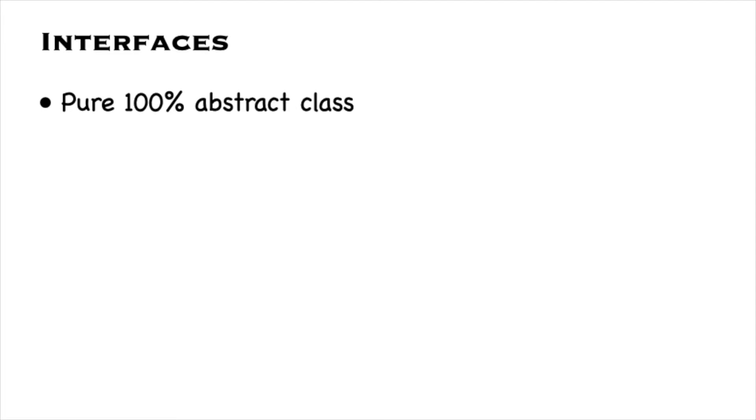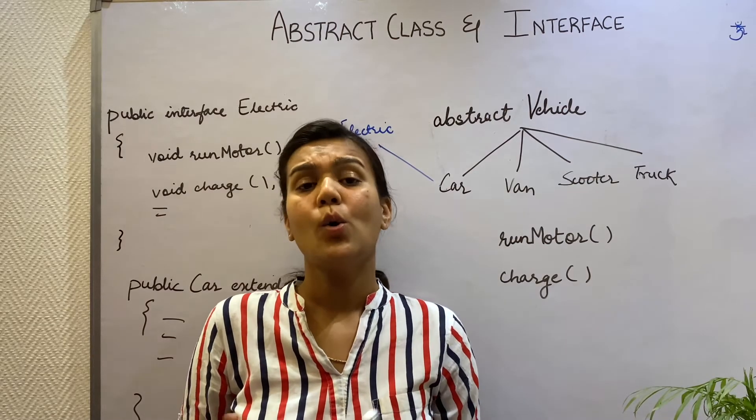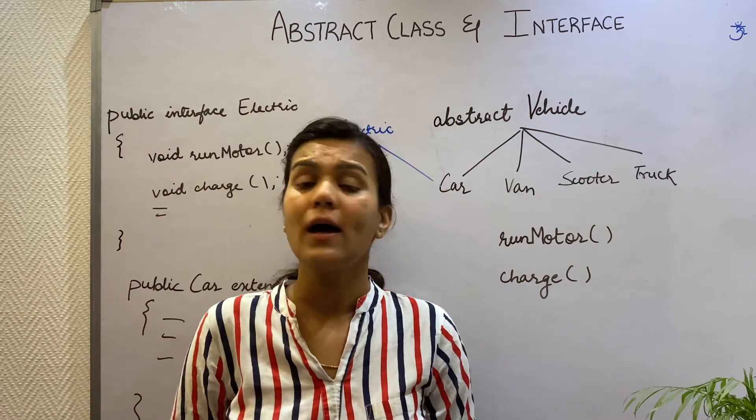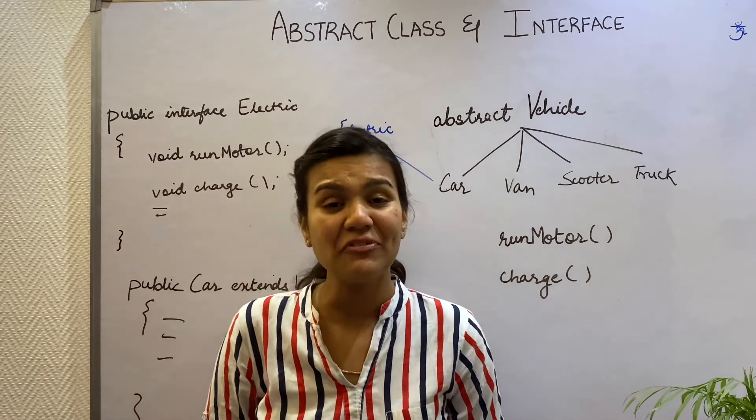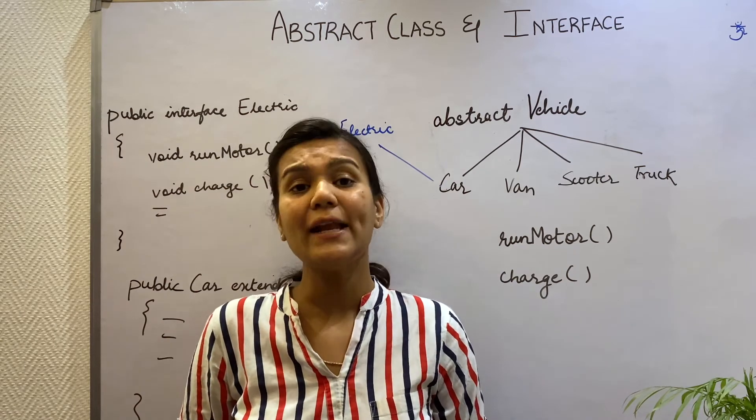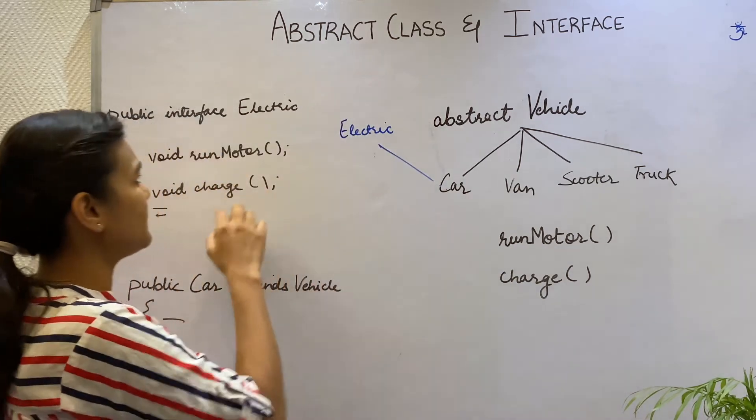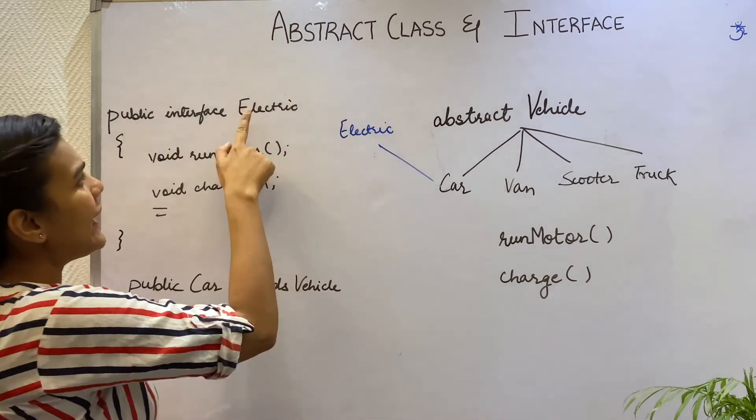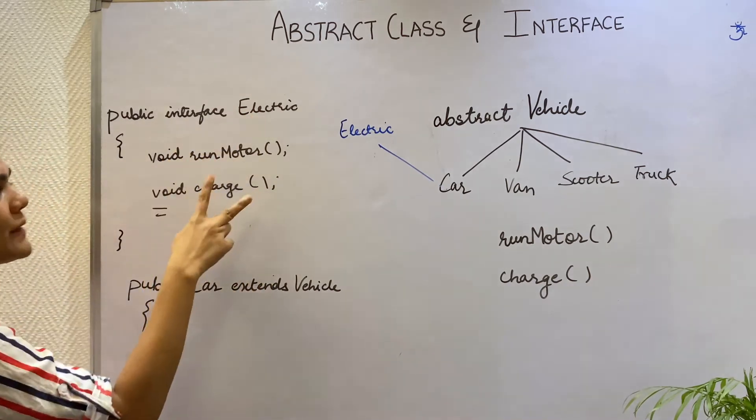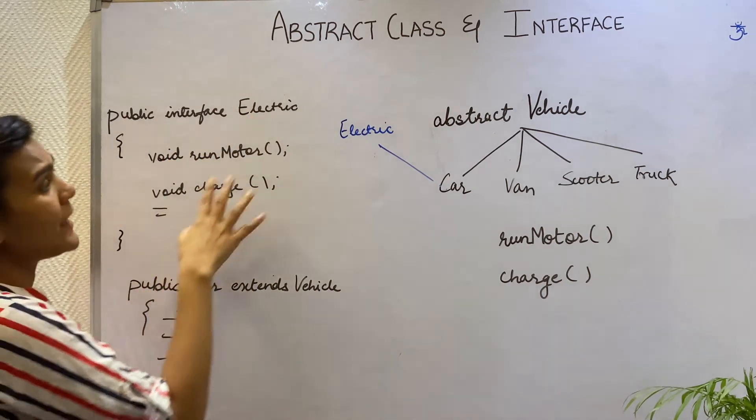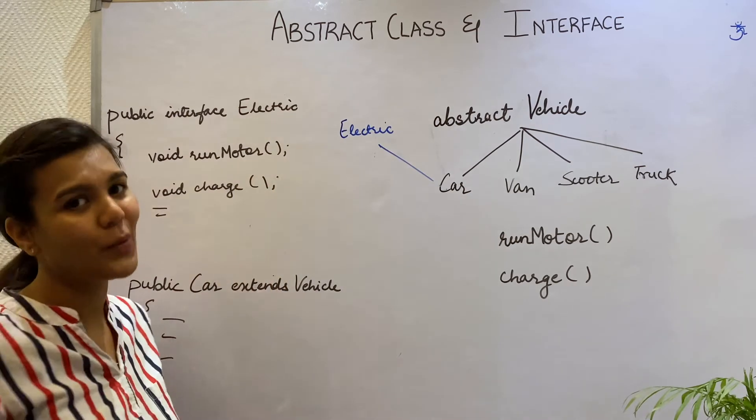Interfaces are 100% abstract classes. What this means is that you can define what a class will do but not how it will be done. So interfaces have all methods as abstract methods and no methods with implementation. You can see that I have written an Electric interface with two methods, run motor and charge, that are abstract methods and have no implementation.